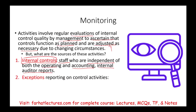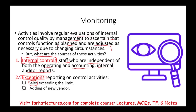We could also look at exception reports on certain control activities. Remember, control activities should alert us to anything unusual, such as sales exceeding a limit. For example, if someone tries to place a sale for a customer on credit and the sale exceeds the limit, it should generate an exception report telling us what is going on. Similarly, if someone is trying to add a new vendor, we have to have certain controls that will alert us.